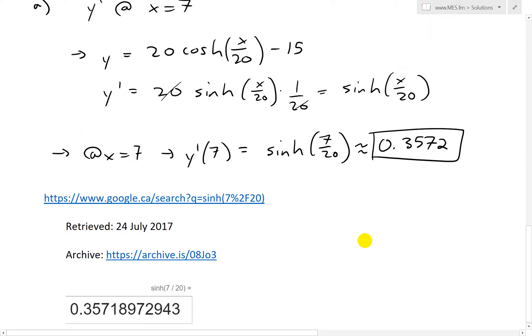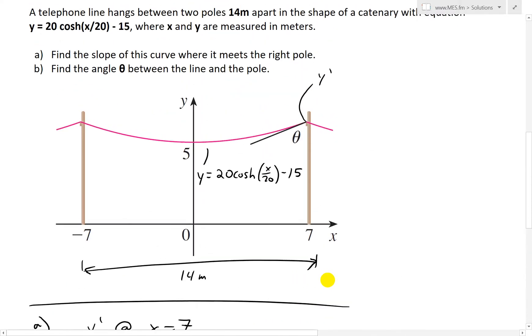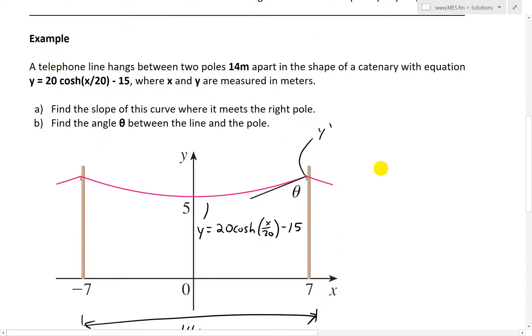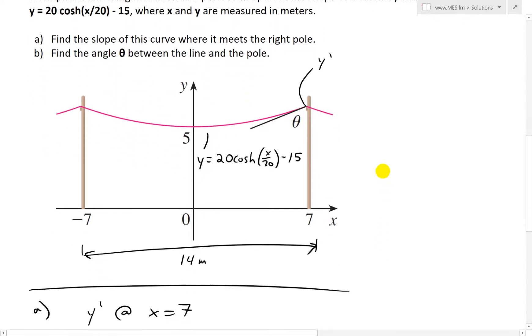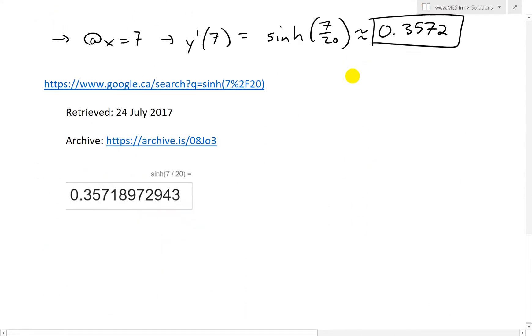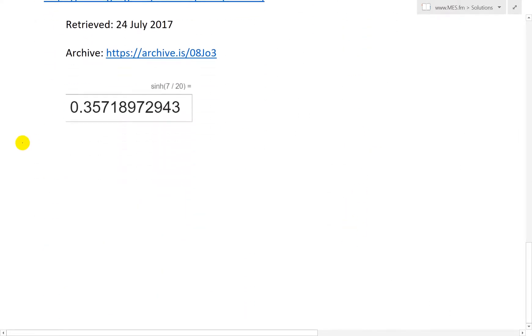So now let's look at part B, which says find the angle of theta between the line and the pole. So we have a line like that, and we want to find out what that angle of theta is between the pole and the catenary. So let's look at part B.